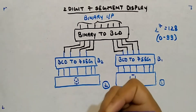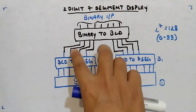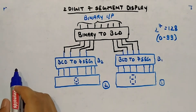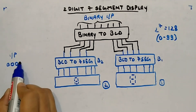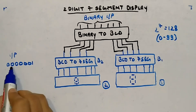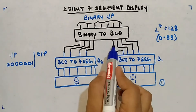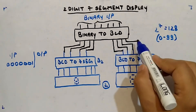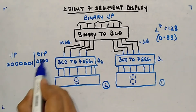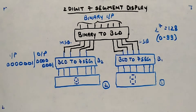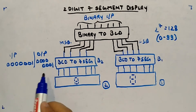Four outputs for one BCD and four for the other BCD. For example, if the binary input is 0000001, the output will be: the lower four bits (LSB) are 0000 and the MSB four bits are 0001. So total eight output variables will be there.